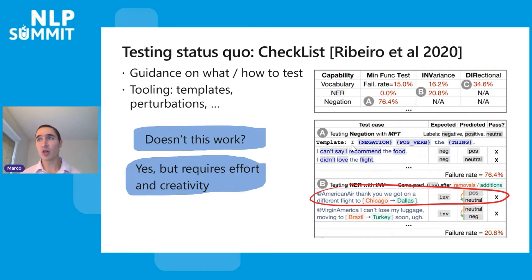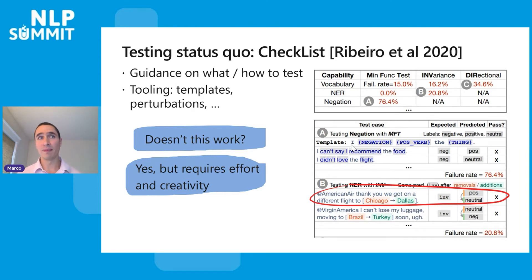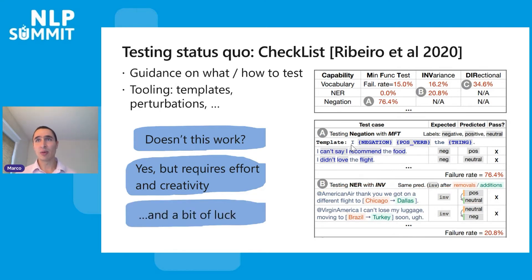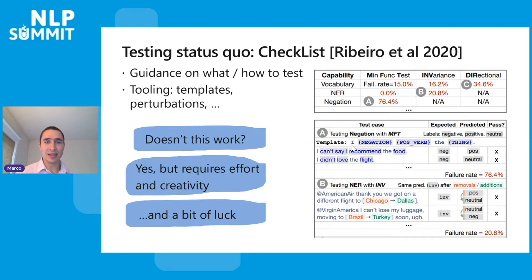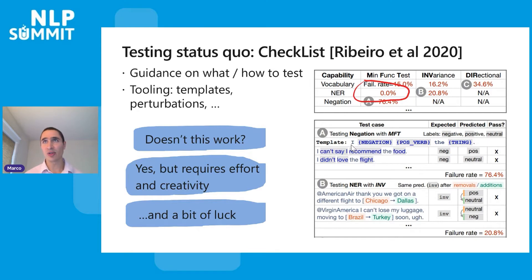Trying different templates takes effort. If you think of perturbation functions where you say, if you change this to this, this is what I expect — that takes work. You have to write code and think it out. Secondly, it takes a bit of luck. Sometimes you come up with a lot of templates but happen not to hit the spot where the model makes a lot of mistakes. Sometimes you get a cell in the matrix where the error rate is zero percent, but there are still bugs in there and you just haven't found them.